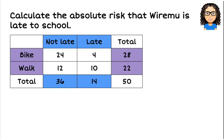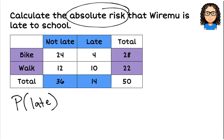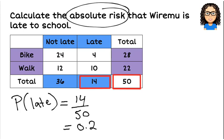So we want to first of all find the absolute risk that Wiremu is late to school. So that's asking us, what is the probability that Wiremu is going to be late? So an absolute risk in this case is just the probability of being late. So that's just absolute risk is another saying for probability. So in this case, the chance that he is late, well we look at that and we say, right, there were 14 times that he was late, out of the 50 times that he went to school. So the probability that he is late is 14 out of 50, which if I turn that into a decimal would be 0.28.